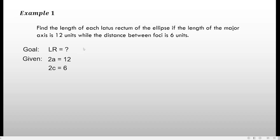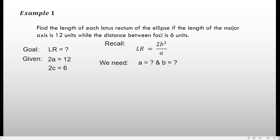We also have 2c equals 6 because the distance between the foci is 6 units. Remember, from the center to a focus is c, so the distance between the two foci should be twice c. From 2a equals 12, divide both sides by 2, so a equals 6.